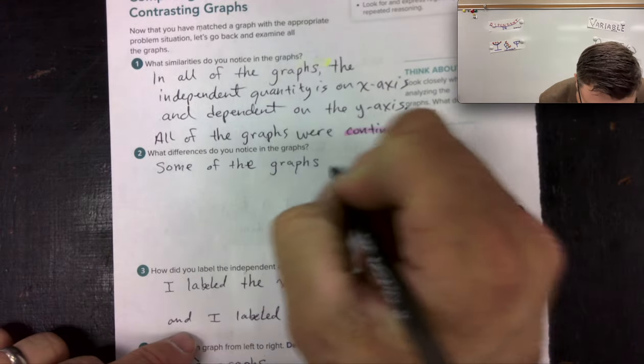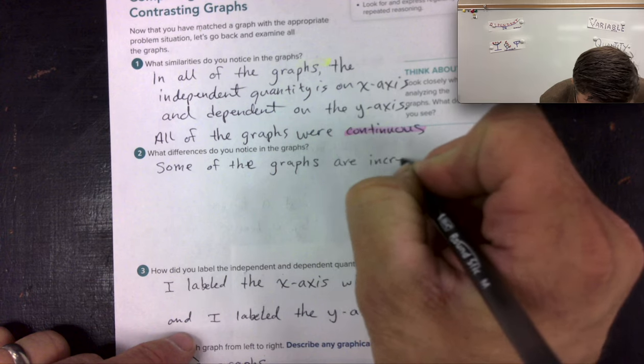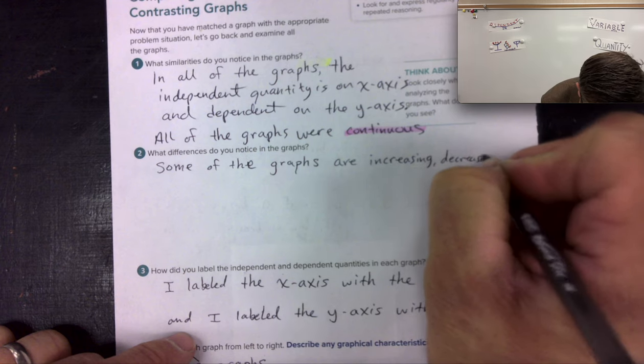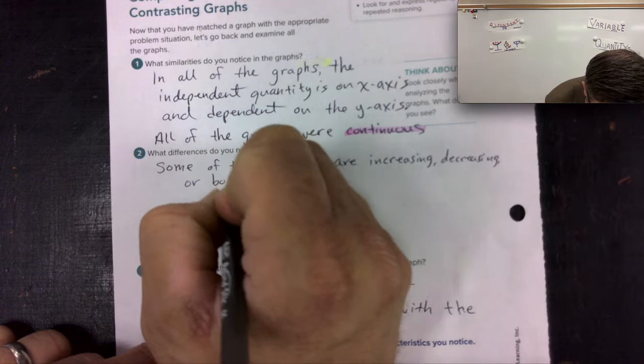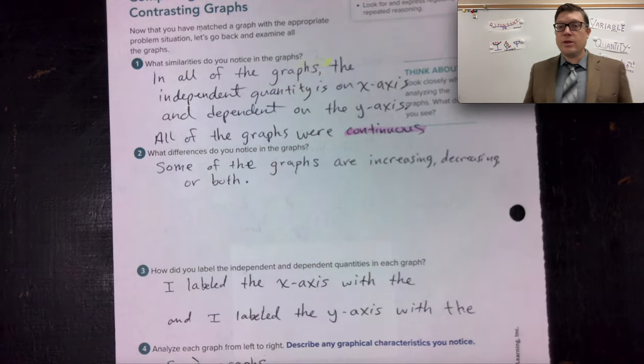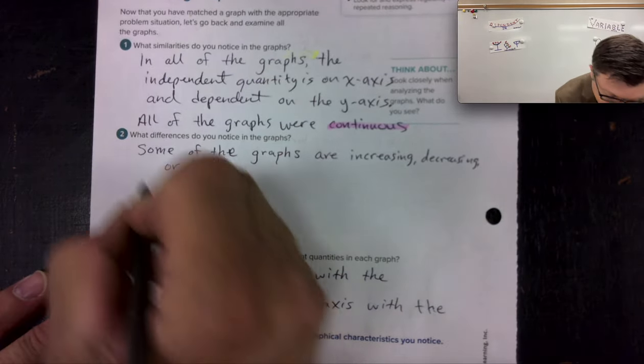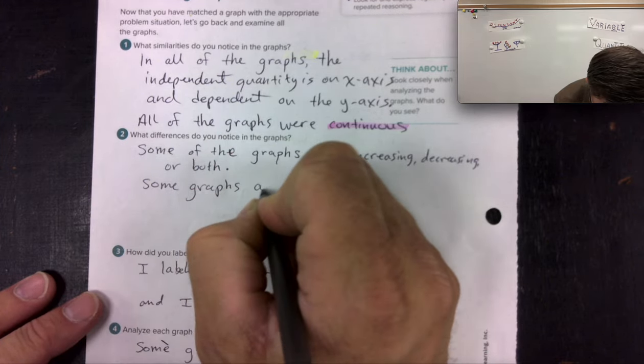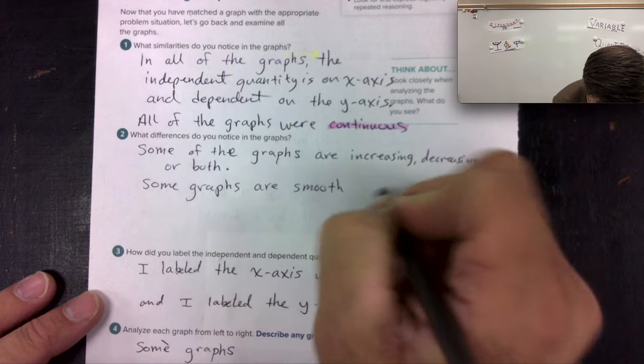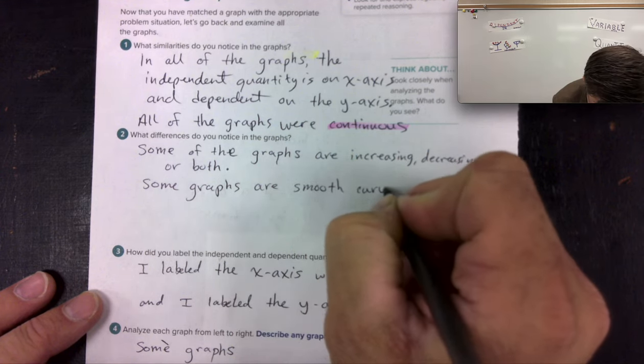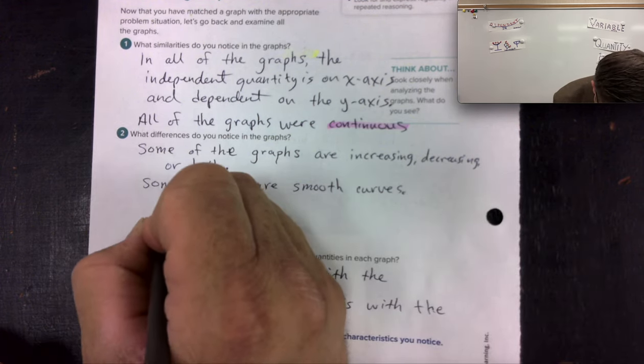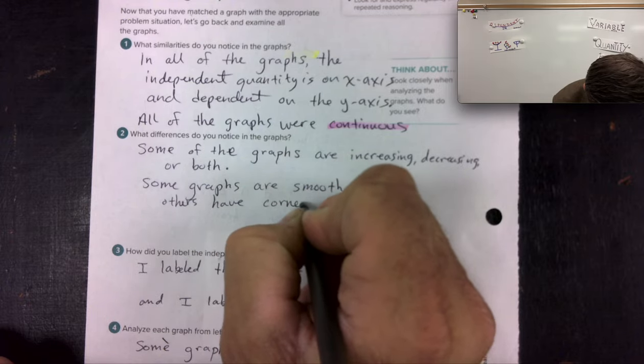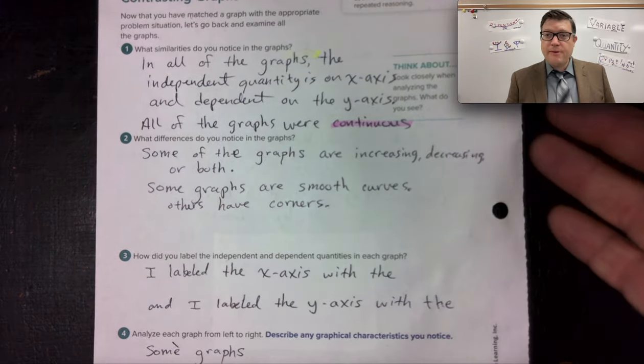Some of the graphs are increasing or decreasing or both. Some of the graphs have corners. Some are smooth graphs.